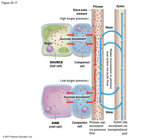To recap: the xylem is primarily responsible for the movement of water, moving upward from roots to shoots. The phloem is primarily responsible for the movement of sucrose, moving from shoots to roots and roots to shoots. There is a one-way flow of sucrose and a continuous loop of water movement. In a mature plant, we have sinks at both the top and the bottom of the plant, so sucrose is still technically moving from shoots to roots and roots to shoots because we have sinks at both ends.